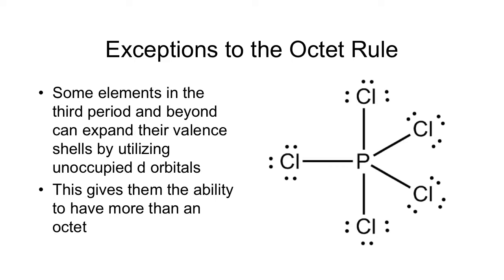But you can only do that for elements that are in period 3 or higher. And the reason for that is because periods 1 and 2 utilize the first and second principal energy levels. And for those principal energy levels there are no d sublevels. It's not until you get to the third principal energy level where you get the 3d.